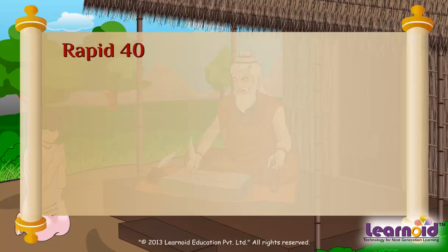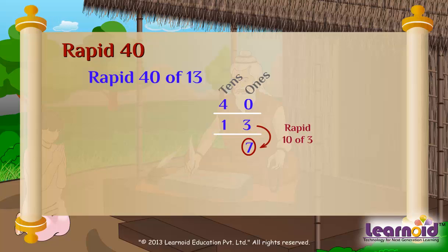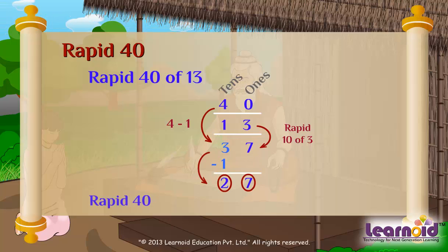Now let's find rapid 40 of 13. Rapid 10 of 3 is 7. Then 4 minus 1 is 3, and 3 minus 1 is 2. So rapid 40 of 13 is 27.